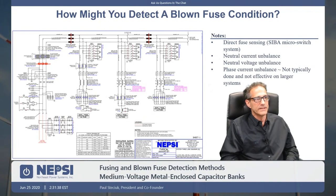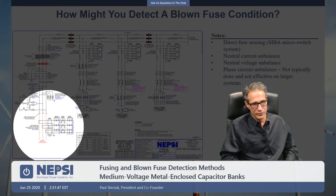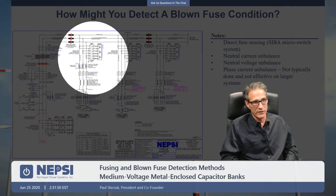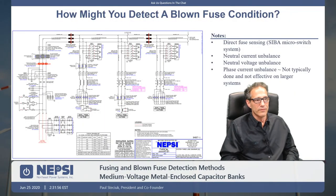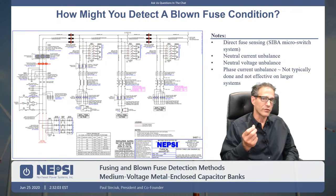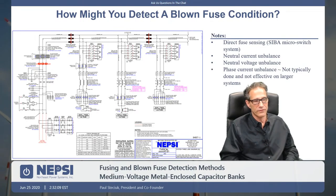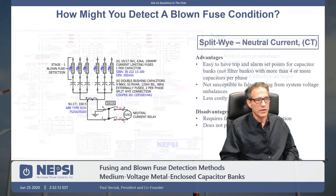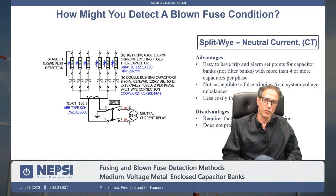Now let's talk about how to detect a blown fuse condition. One method that is very seldom done is attempting to monitor the current at the incoming of the bank, or even at the branch or stage level. That type of monitoring is difficult and usually does not have the accuracy to detect a blown fuse condition, especially when there are a lot of capacitors being utilized.